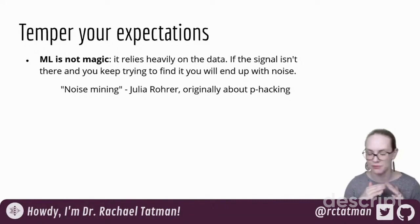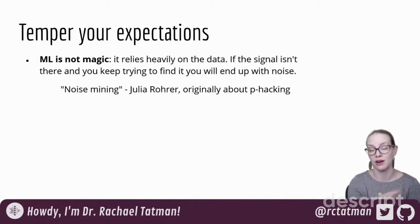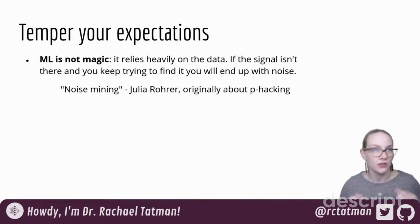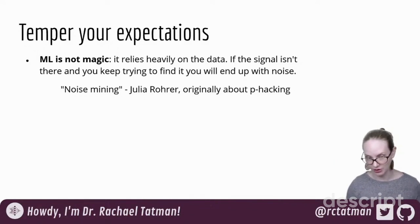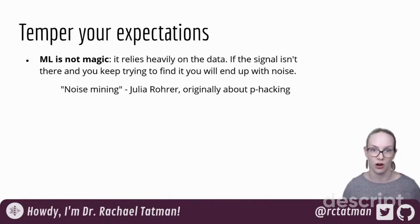Someone from a non-profit wanted to build a model to identify wrongful convictions that had been overturned, to help identify other wrongful convictions — which is a hard, interesting problem. But the data they had was 11 cases. That's just not enough data for a machine learning model to look at thousands of cases and identify which ones are probably also wrongful convictions. It's not that it's not a good problem to solve — it's that there wasn't enough signal, there wasn't enough training data to automate that.